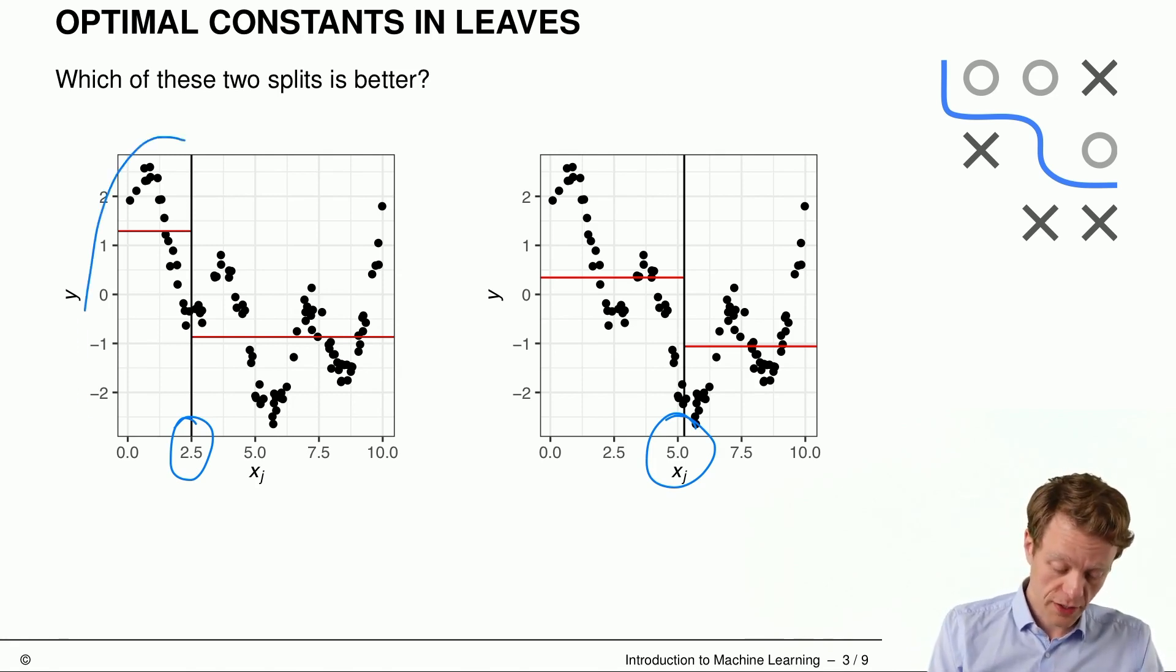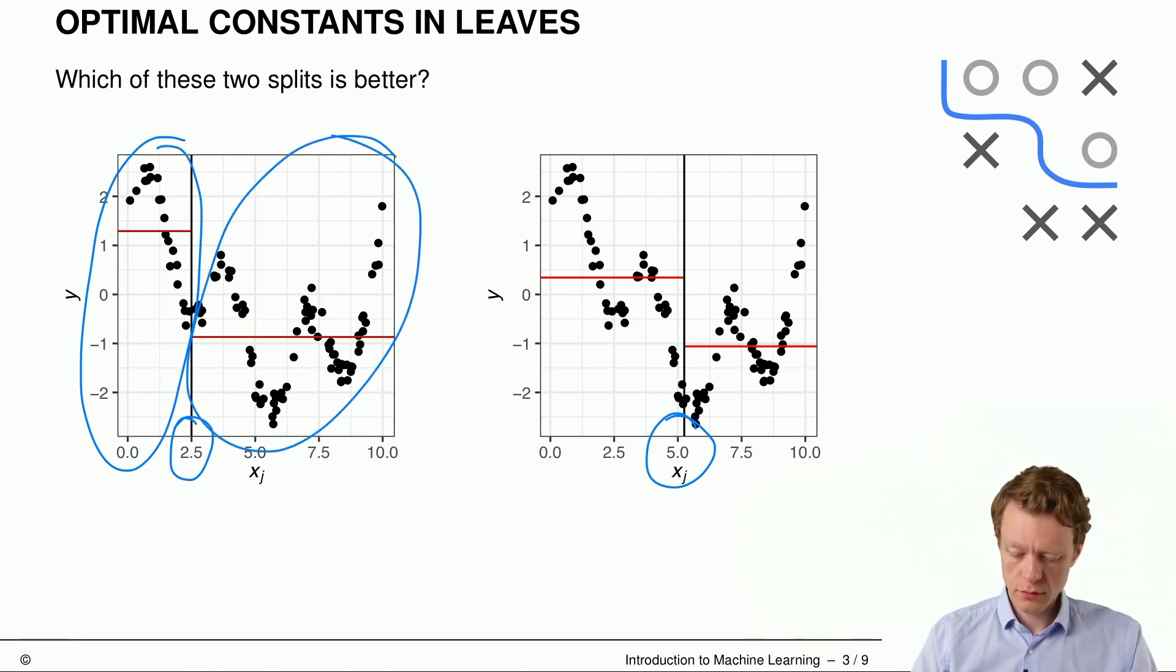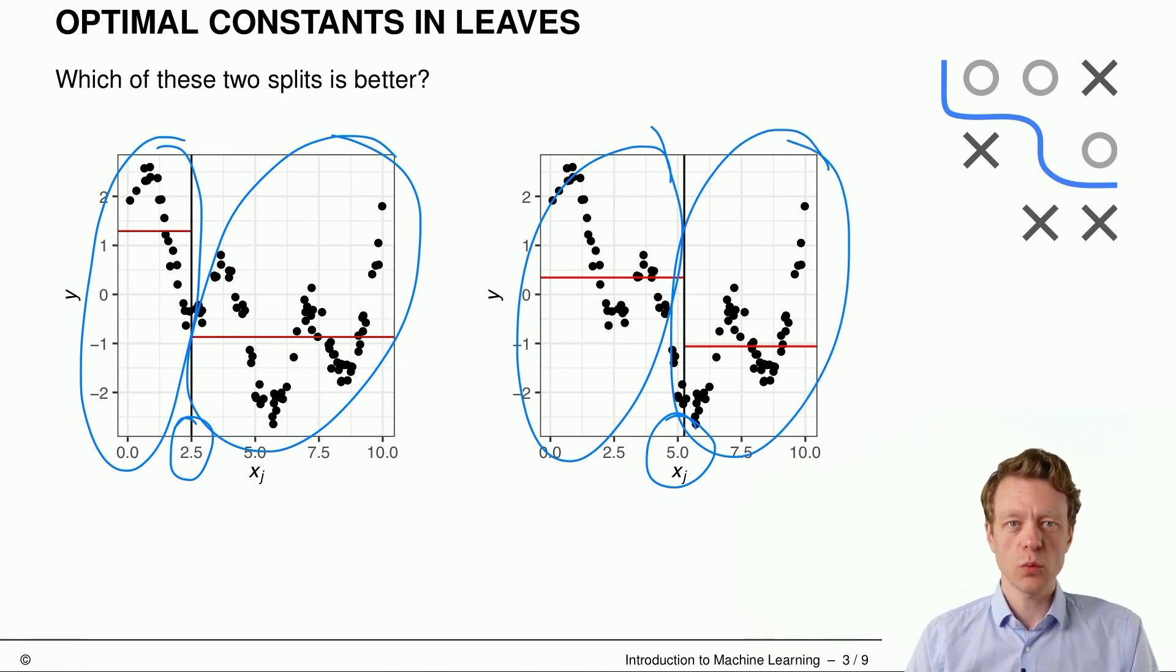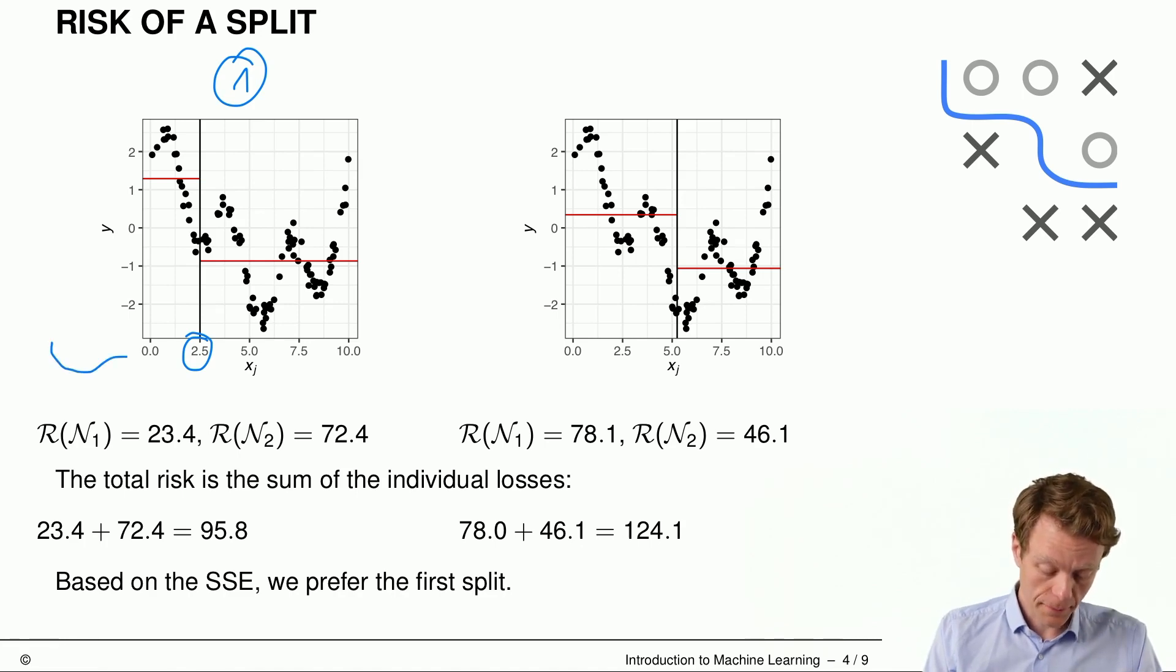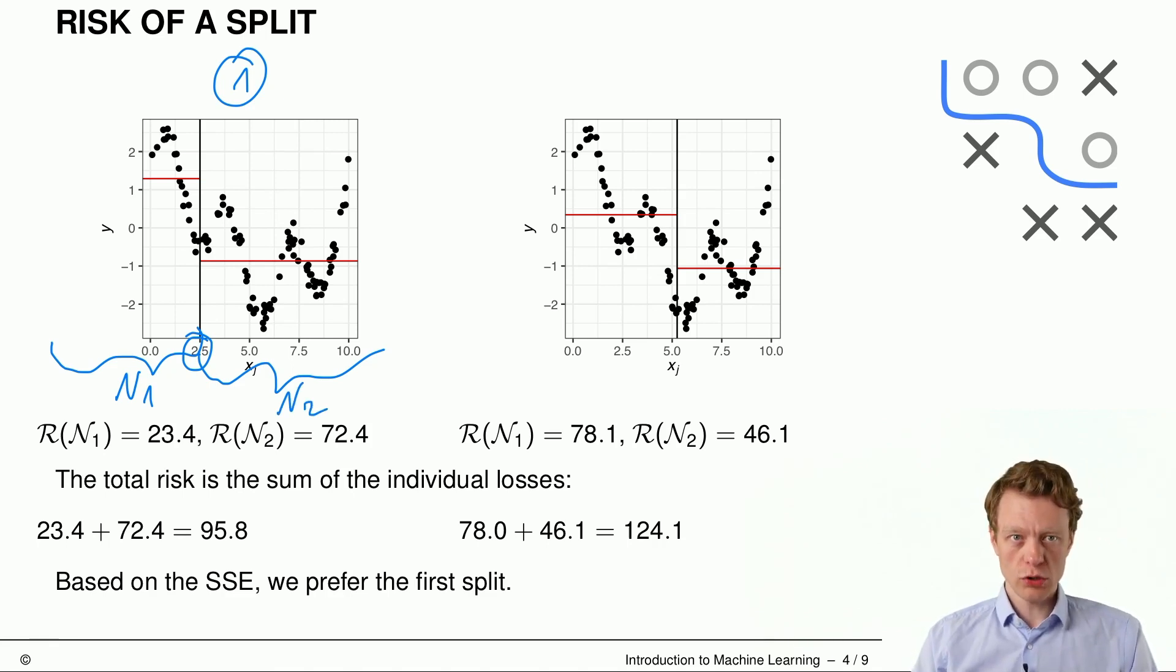So this means we divide the feature space into child nodes n1 and n2, and in those child nodes we can simply compute the risk in both sides. So let's start with the left hand side, let's call this 1. And now with this split at xj equals 2.5, we have split the feature space into something where xj is smaller than 2.5, and we call this n1, and something where xj is greater or equal than 2.5, we will call this n2.